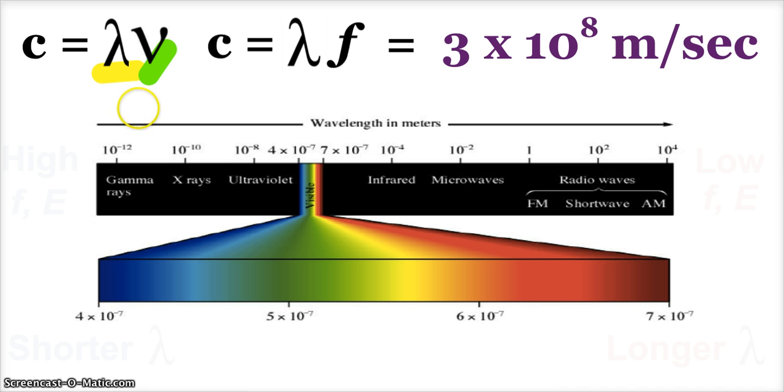So wavelengths are measured in meters, frequency in inverse seconds. When you multiply those two together, you get velocity, meters per second. Well, all of this electromagnetic radiation travels at the same speed, the speed of light, which is given the symbol c. And c is equal to, as we see here, 3 times 10 to the 8th meters per second.